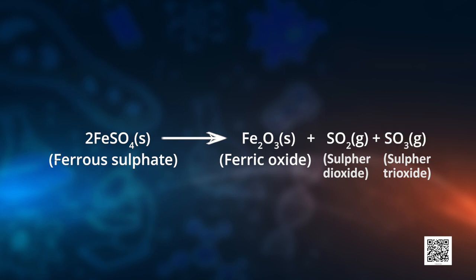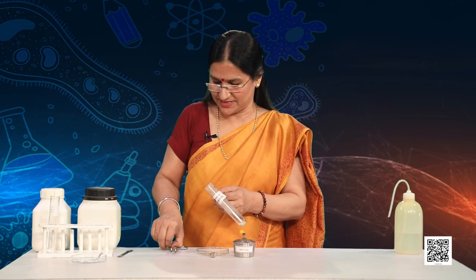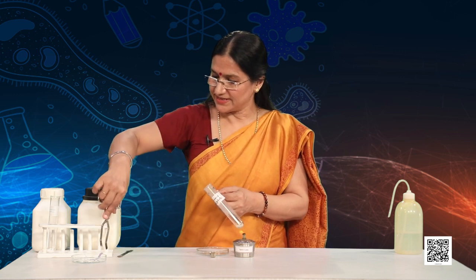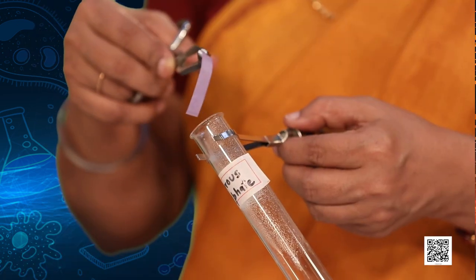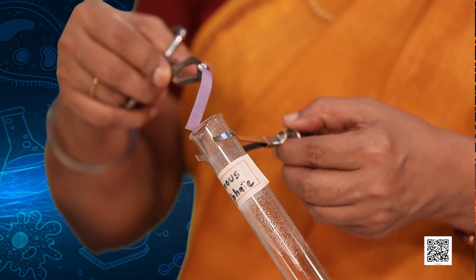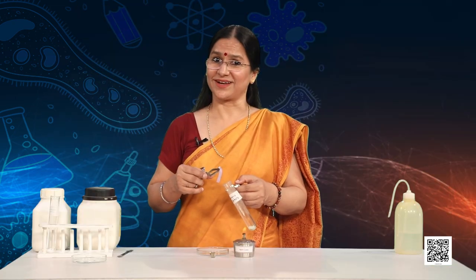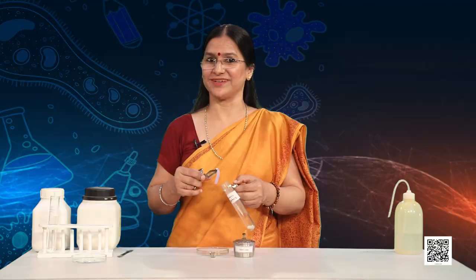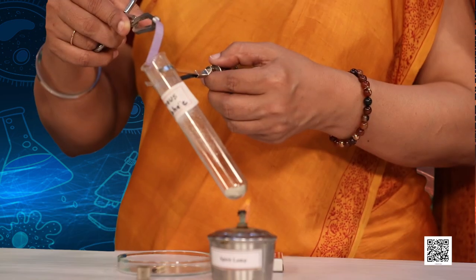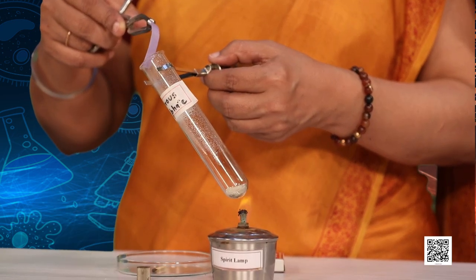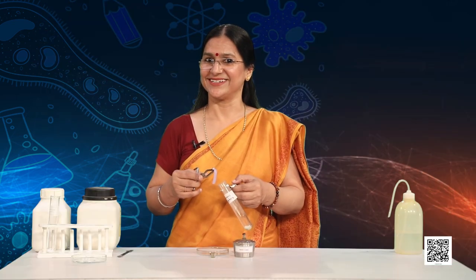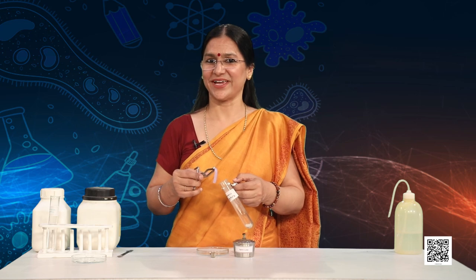Now put on your thinking caps — what will happen if I keep this moist blue litmus paper at the mouth of the boiling tube where the gases are being emitted? You have already studied the colour change of litmus paper, so tell me whether you will see any change. And what would have happened with a red moist litmus paper? Think — explore and find out.